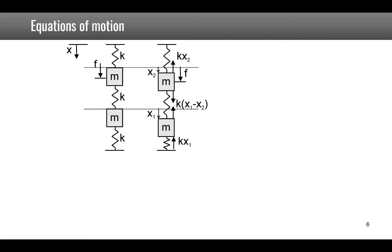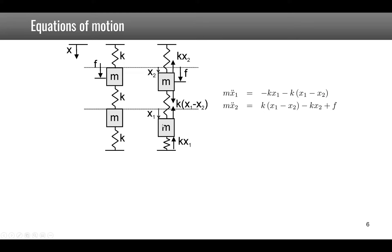In this example, we write the equations of motion by applying Newton's law to each of the masses. For the first mass M1, there is one force due to the compression of the spring, expressed by minus kx1. The second force is related to the spring constant as well as the relative displacement between mass 2 and mass 1. If mass 2 and mass 1 are moving with the same displacement, there is no compression or stretching of the spring, so no force applied.